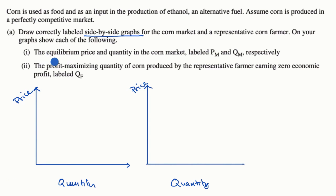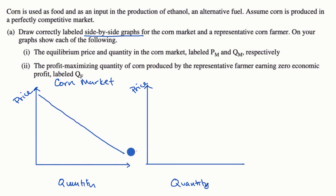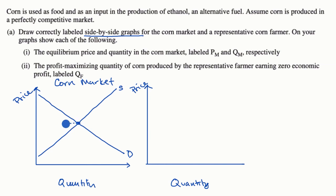Let's draw the corn market. Our demand curve might look something like this — when price is high, low quantity demanded; when price is low, high quantity demanded. And supply goes the other way around, so our supply curve would look something like this. This intersection gives us our equilibrium price, P sub M, and our equilibrium quantity, Q sub M.